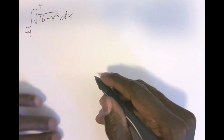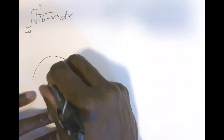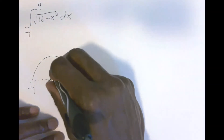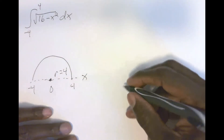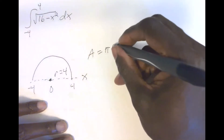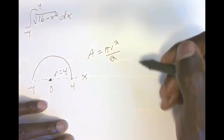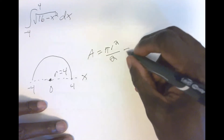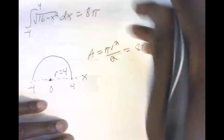The easiest way to do this integral is just an understanding of analytical geometry — specifically that this is the graph of a semicircle centered at the origin with a radius of four. The graph goes from negative four to four on the x-axis. Since a definite integral is just the area under the curve, and the area of a semicircle is pi r squared over two, with r equal to four, that gives us 16 pi over two, or eight pi. So this integral equals eight pi, solved in a matter of seconds.